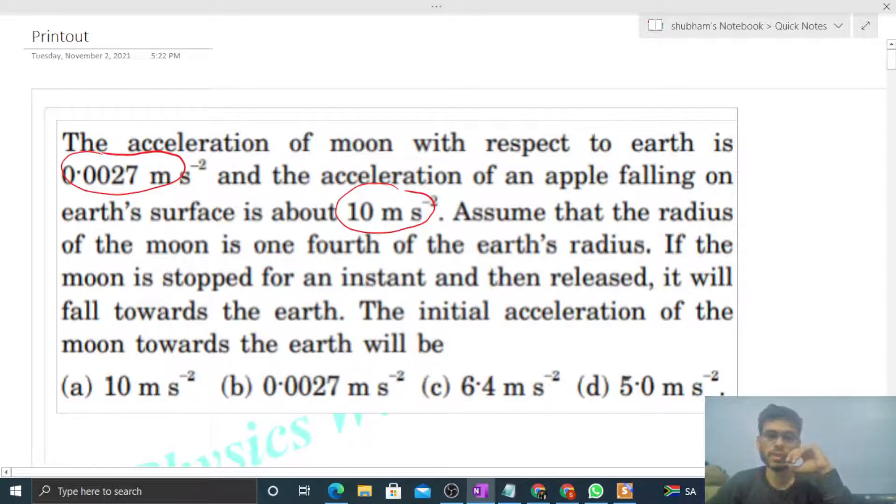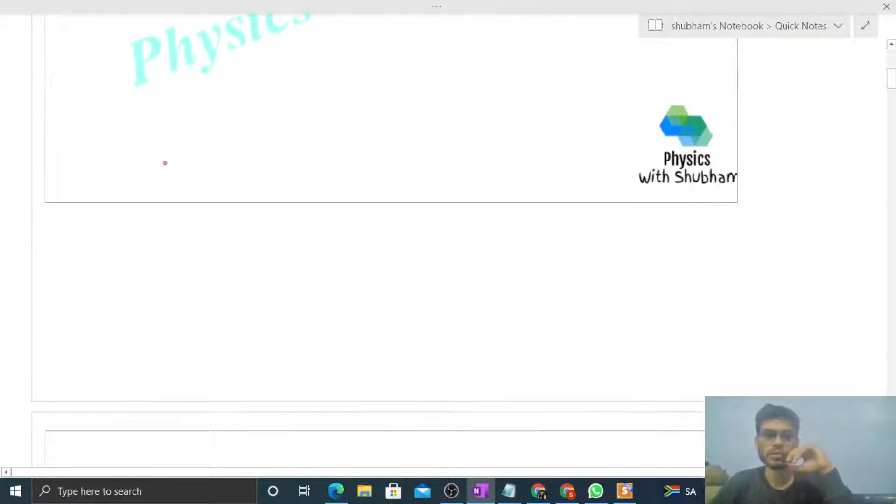So this way we have Earth and Moon, and initially this moon moves around the Earth. What is given is the centripetal acceleration of the moon when the moon moves around the Earth.